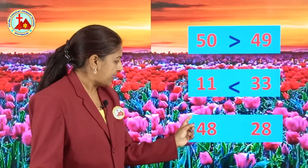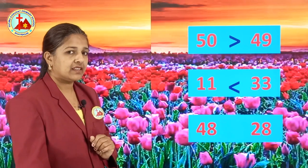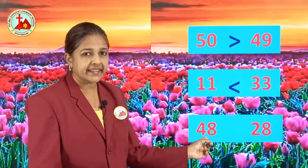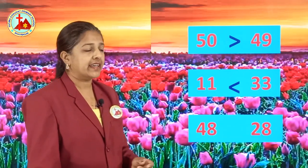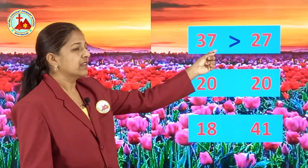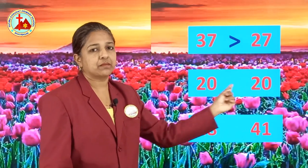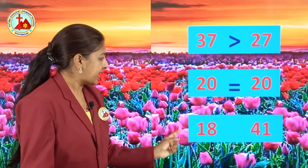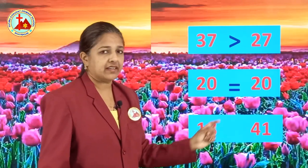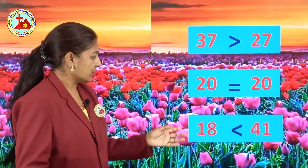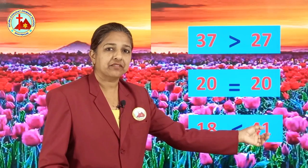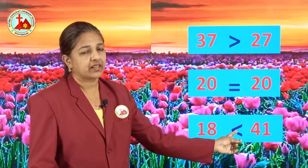Next numbers are 48 and 28. 48 is the greater number — 48 is greater than 28, so greater than sign. Now, 37 and 27. 37 is greater than 27, so here greater than sign. Next numbers are 20 and 20. Both the sides numbers are equal, so equal to sign. Next, 18 and 41. 18 is lesser than 41, so here lesser than sign.